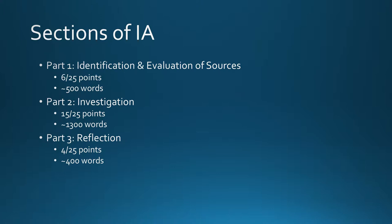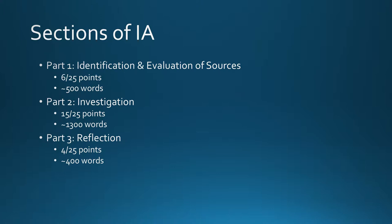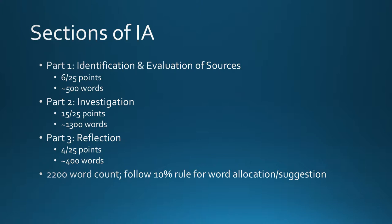When Part Three was introduced in the new curriculum, many teachers thought it would be an easy four points — that's actually not accurate. This section has been relatively challenging to achieve maximum marks, so we'll talk about avoiding common errors. The 2,200 word count is a firm limit. Follow the 10% rule for word allocation. The bibliography is required. Every time you cite, you'll be footnoting. Importantly, the bibliography and footnotes do not count toward the 2,200 words — which is very beneficial.